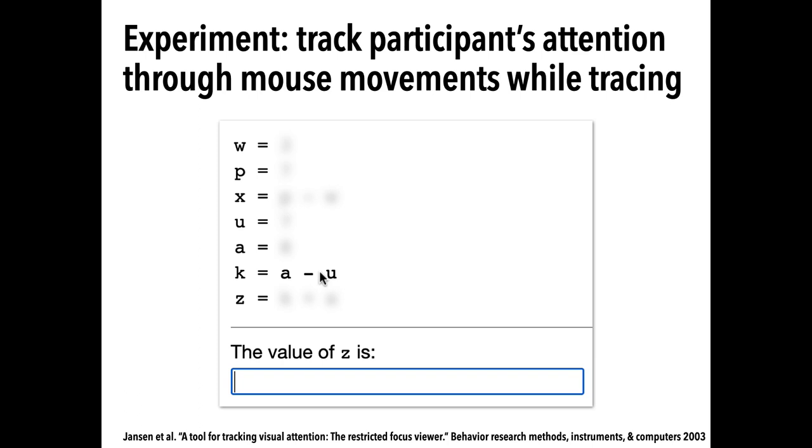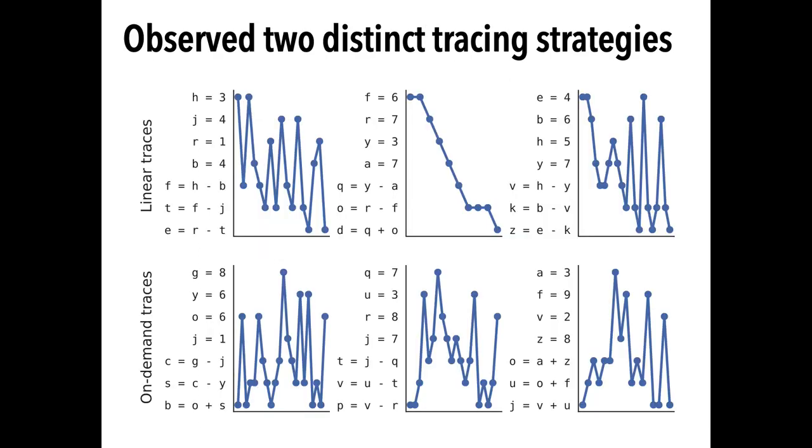We blurred out the right-hand side of each assignment and only show the text when a user hovers over the line with their mouse. Then their mouse is essentially a proxy for their attention, similar to an eye-tracking study.